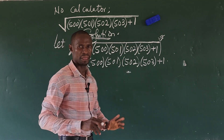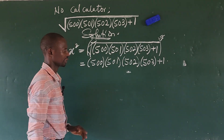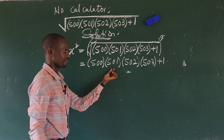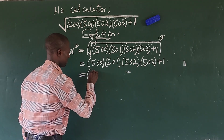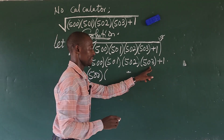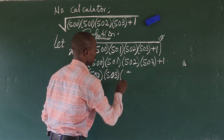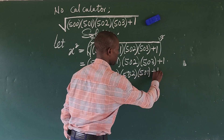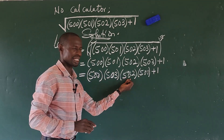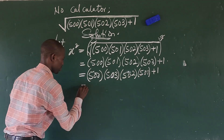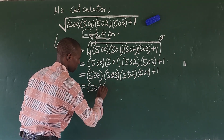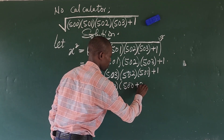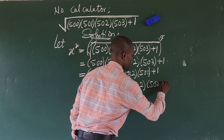Next, I want to rearrange the terms. I'll reorder them as 500 times 503, then 501 times 502, then plus 1. We can also rewrite 503 as 500+3, 502 as 500+2, and 501 as 500+1. So we now have 500 times (500+3), times (500+2), times (500+1), plus 1.